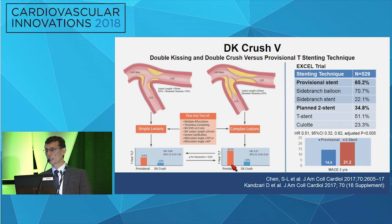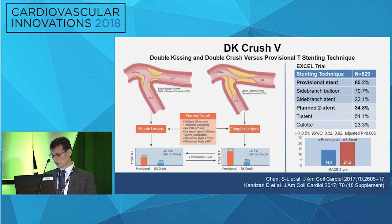In the Excel trial, provisional stenting was used in two-thirds of the cases, while planned two stents was used in about one-third of the cases. DK CRUSH was not utilized, possibly because it was preceding the trial or operators preferred not to do it given the complexity.